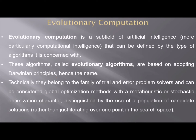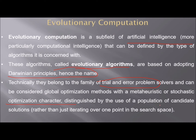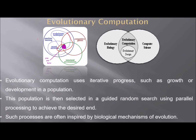Evolutionary computation is a subfield of artificial intelligence defined by the type of algorithm it uses. These algorithms, called evolutionary algorithms, are based on adopting Darwinian principles. They belong to the family of trial-and-error problem solvers and can be considered global optimization methods with a meta-heuristic and stochastic character, distinguished by the use of a population of candidate solutions. This covers machine learning, simulated environments, neural networks, and even evolutionary biology.